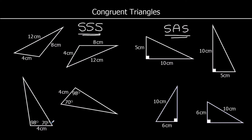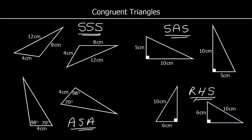Equally, if we have two angles and the side in between them — Angle Side Angle — the triangles must be congruent. And if we have a right-angle triangle and we know the hypotenuse and one other side, that is another rule: the triangles are congruent. So it's a right-angle triangle with a 90-degree angle, and the hypotenuse and one other side are the same.